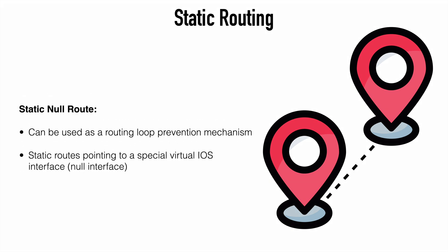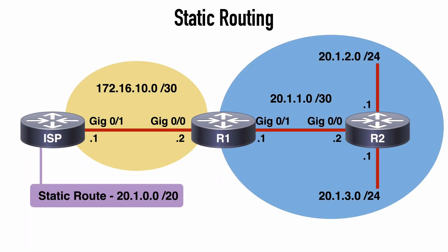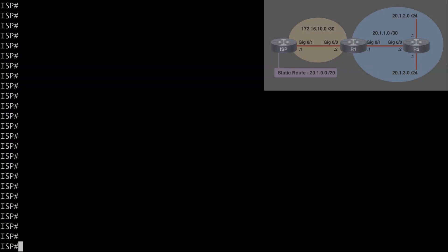One final topic I want to look at with static routing is the concept of a static null route. These can be used to drop network traffic in order to prevent routing loops. These are normal static routes that point to a null interface, which is a special type of virtual interface found within IOS. If you look at our topology, we have an ISP router connected to R1. The ISP is providing a block of networks to this customer, which is the 20.1.0.0/20 network — a large range of potential addresses. However, only a few of those networks are currently in use: the 20.1.1.0, 20.1.2.0, and 20.1.3.0 networks.